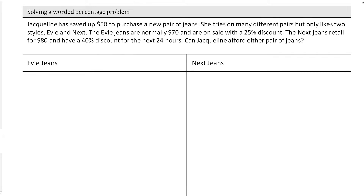All right, we've got a bit of a worded problem here. Make sure you follow along with me showing full working. It says that Jacqueline has saved $50 to purchase a new pair of jeans.